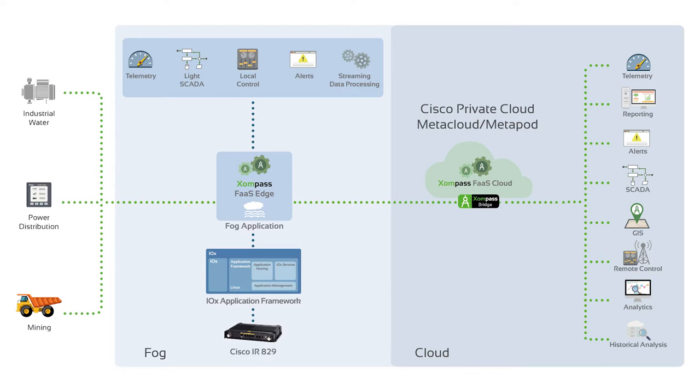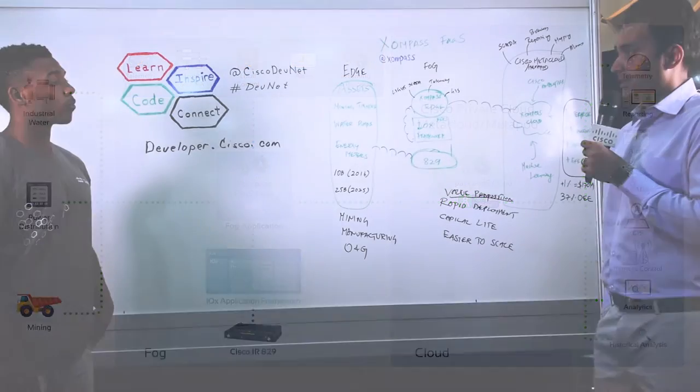So the field assets we're talking about here include mining trucks, water pumps, energy meters, anything that is moving machinery, rotating machinery that is doing manufacturing work. So we see that there are about 10 billion assets today in the industry growing to about 25 billion, but they have to be connected. They have to be smart. They have to have actionable data. So the FaaS platform is transversal across all these different industries. We talked about mining, oil and gas, and manufacturing, and provides a very easy way to connect these assets and provide enterprise value.